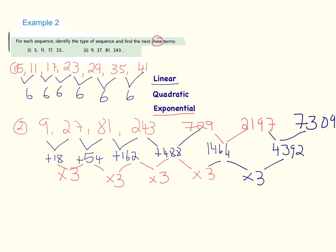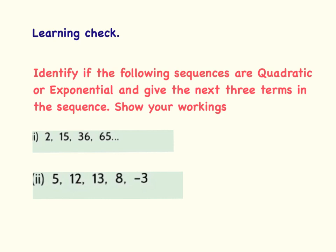With an exponential sequence, values get very large very quickly — much bigger than with a quadratic or linear sequence. You should spot that: if numbers are changing dramatically, getting really big or small very quickly, they are likely exponential. Your learning check: identify whether the following sequences are quadratic or exponential, give the next three terms, and show your workings — including how you found the common difference and the second difference.